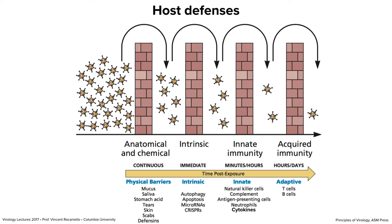We will talk today about intrinsic and innate defenses, mostly about innate because it's a really well-orchestrated system of defense. Finally, if a virus has got beyond the innate wall, it encounters the adaptive system, made up of T cells and B cells. The idea is that you have a series of walls, each posing a barrier, with fewer and fewer viruses getting by. Some hosts die because the virus wins in the end.